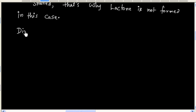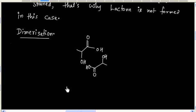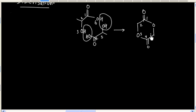In this case we have dimerization. So we have one molecule of acid and this is another molecule of acid. We can lose two molecules of water to form a six-membered ring.